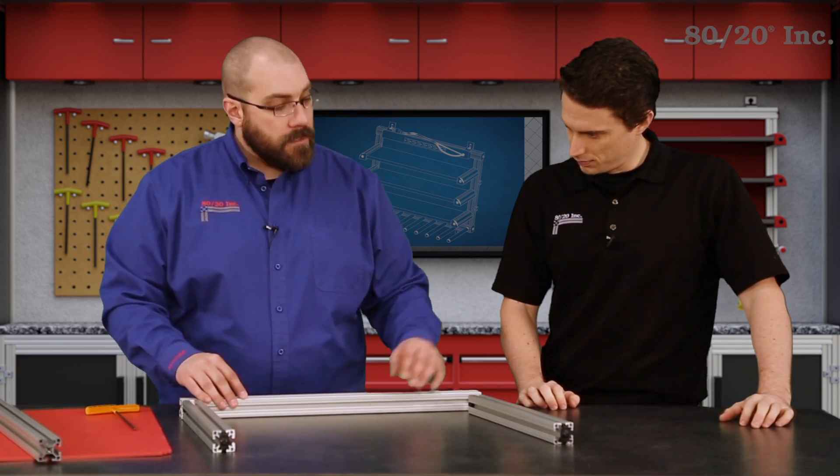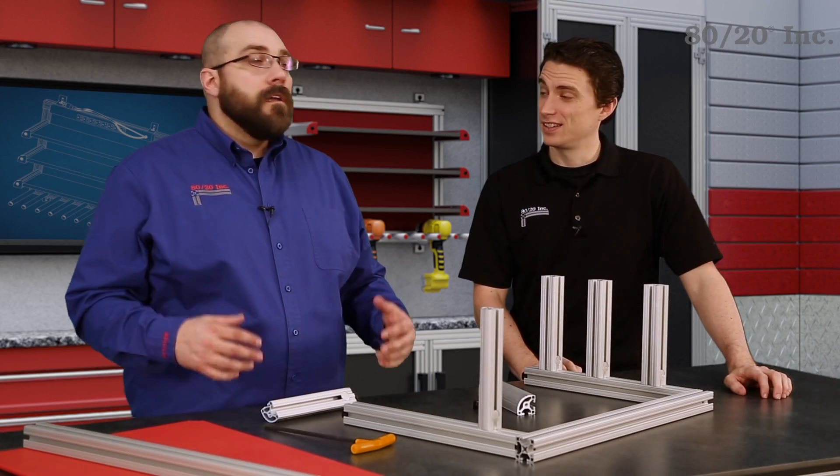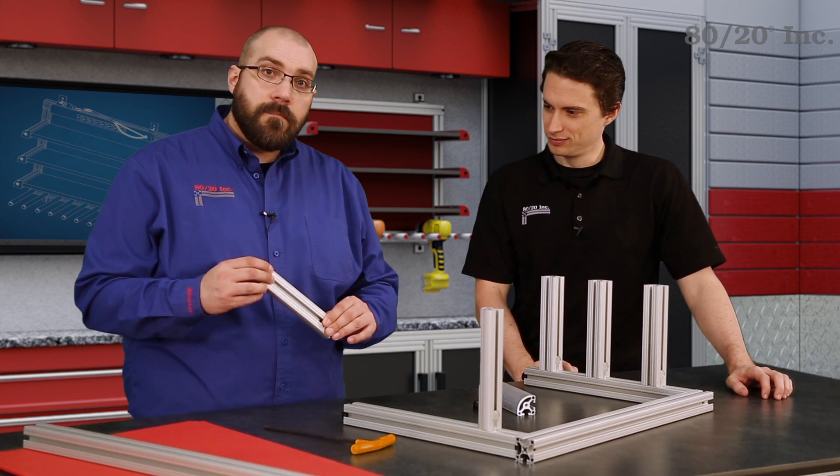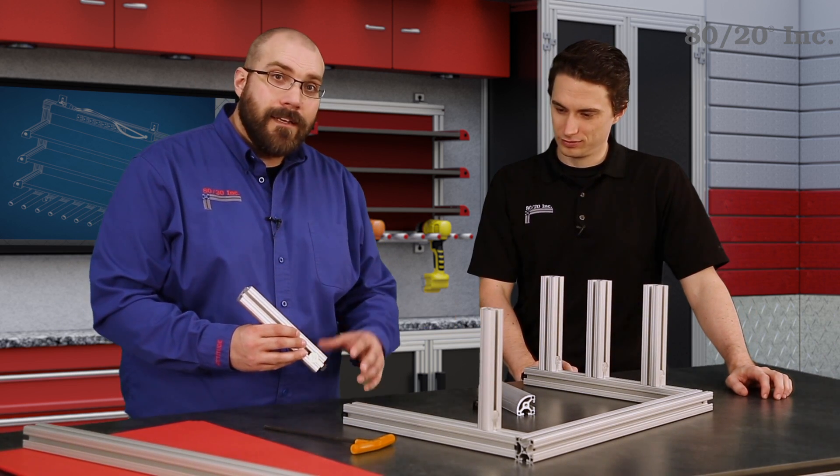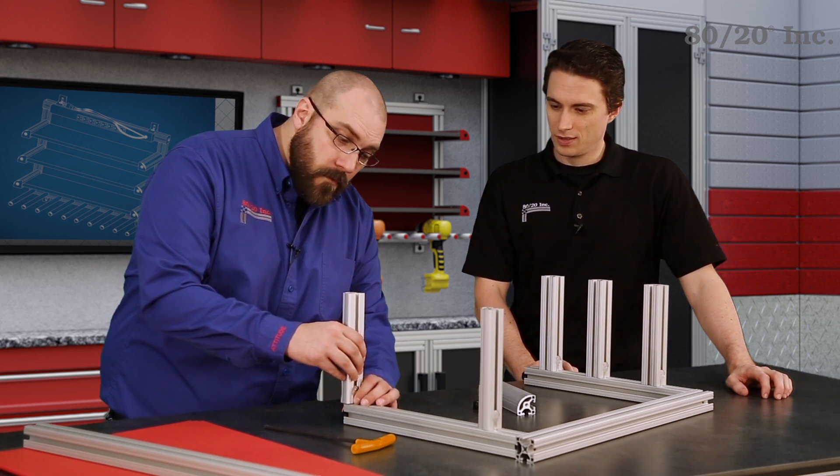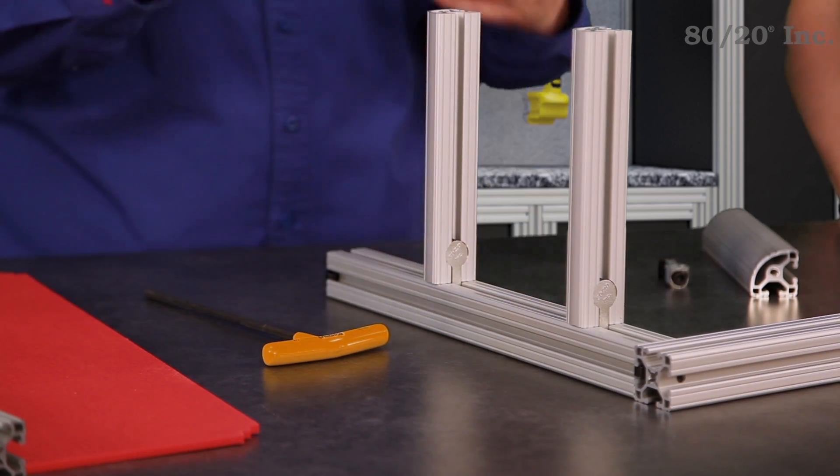Now we're ready to move on to our shelves. For this, we're going to be taking our radius profiles, three on each side, sliding those into position, and then tightening everything down. Once we have those into place, we'll be ready to slide our panels into the t-slots.